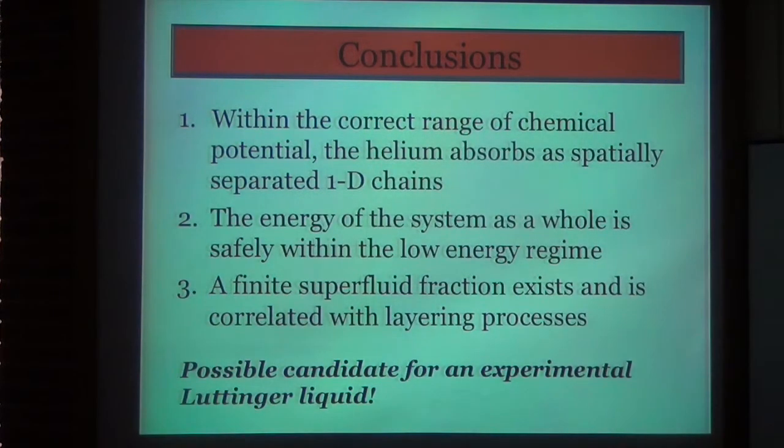So, what conclusions can we draw from all this data? First, within the correct range of chemical potential, helium absorbs as spatially separated 1D chains. Additionally, the energy of the system as a whole is safely within the low energy regime. And finally, a finite superfluid fraction exists and is correlated with layering processes. All of this tells us that superfluid helium absorbed into mesoporous silicates is a possible candidate for the experimental realization of a Luttinger liquid. It's possible to measure the Luttinger parameters from the results of path integral Monte Carlo simulations and then compare these predictions with the theory and see if they agree.